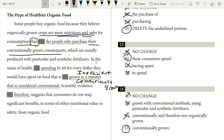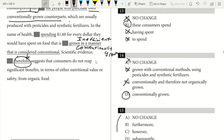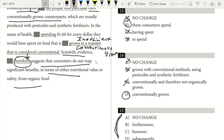Scientific evidence — when I see that, I know I'm looking for a transition word that connects the previous sentence to what follows. Consumers think organic food helps them be more healthy, but scientific evidence suggests they don't reap significant benefits in terms of nutritional value or safety. These are contrasting opinions — consumers think it's worth it, but scientific evidence suggests otherwise. Our contrasting word is 'however.' So our answer is going to be C.